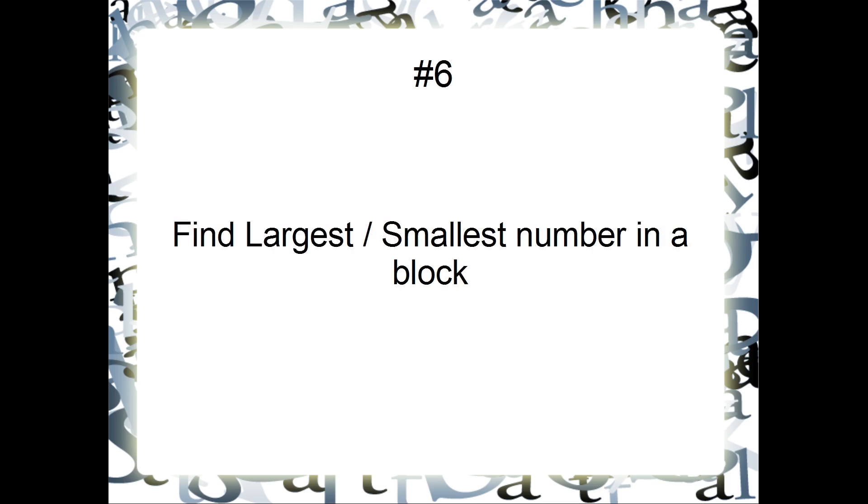Next, find largest or smallest number in a block. First value in a block, again, this is a loop program. First value in a block is taken as smallest or largest number. And next value is compared. If the value compared is greater, then copy that value into accumulator and so on. So, this is the program for largest. Change the logic, make comparison for smaller number and you get the same program for smallest number.